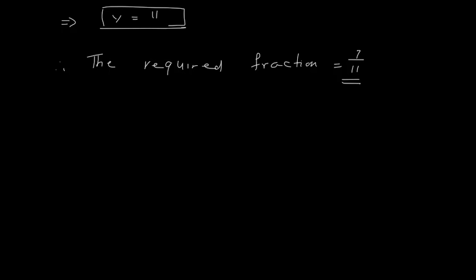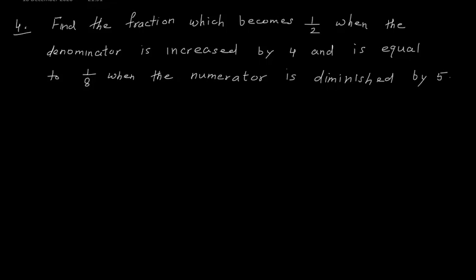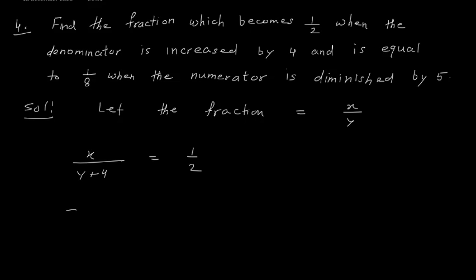It is very easy to convert whatever is given in word form to equation form. Now the next question: find the fraction which becomes 1 upon 2 when the denominator is increased by 4, and equals 1 upon 8 when the numerator is diminished by 5. Let the fraction be X upon Y. When denominator is increased by 4: X upon (Y plus 4) equals 1 upon 2, so 2X minus Y equals 4. This is equation 1.